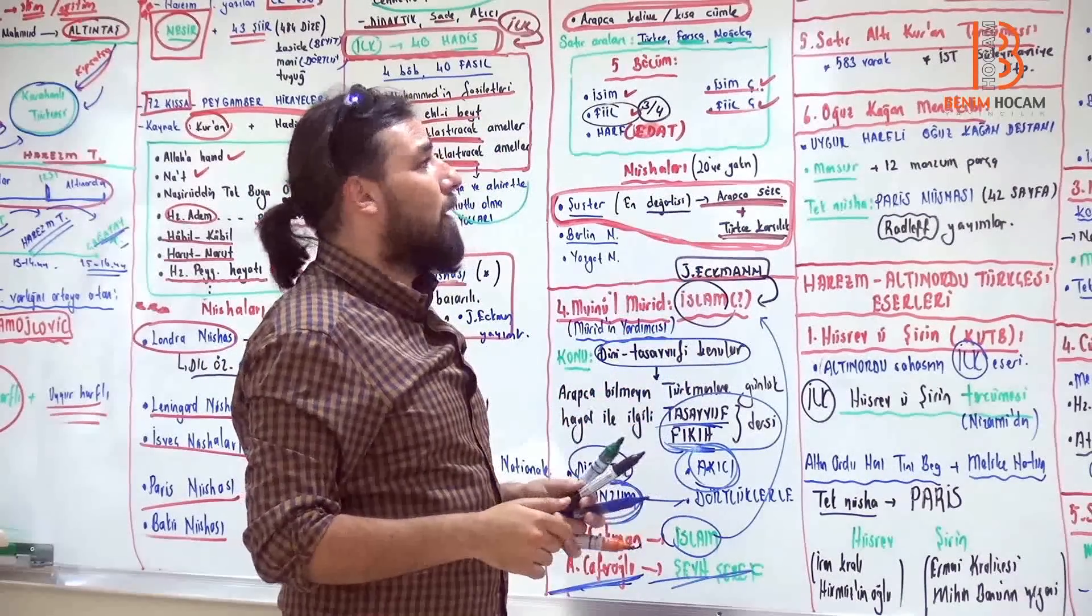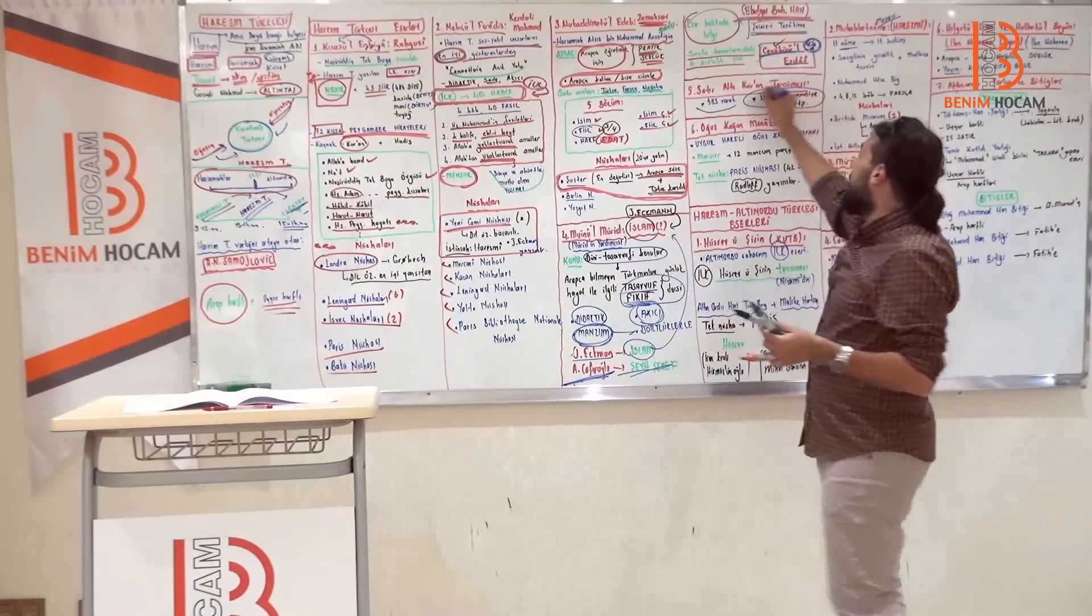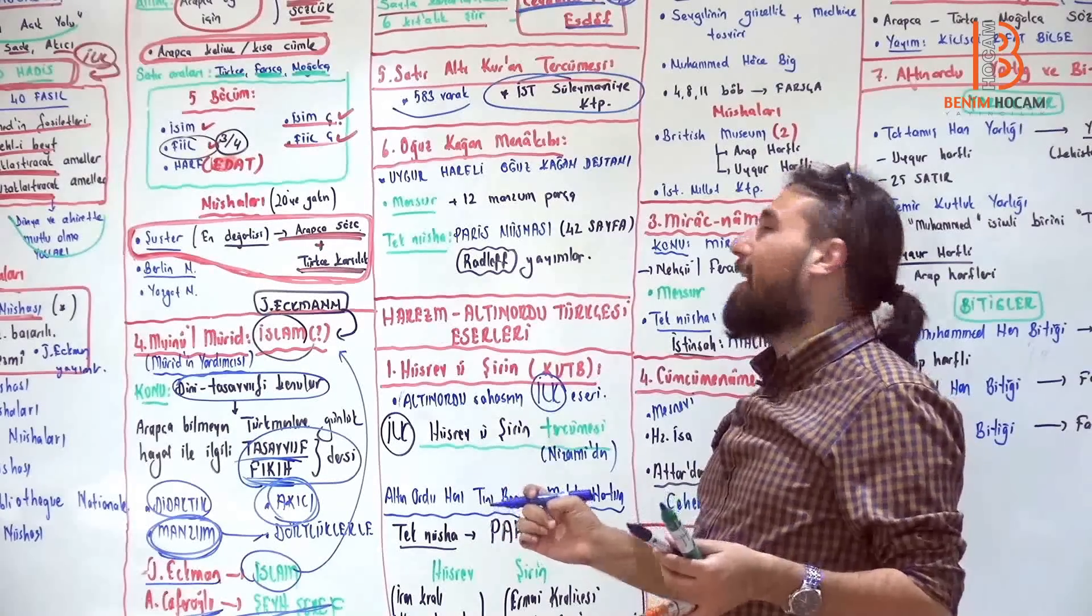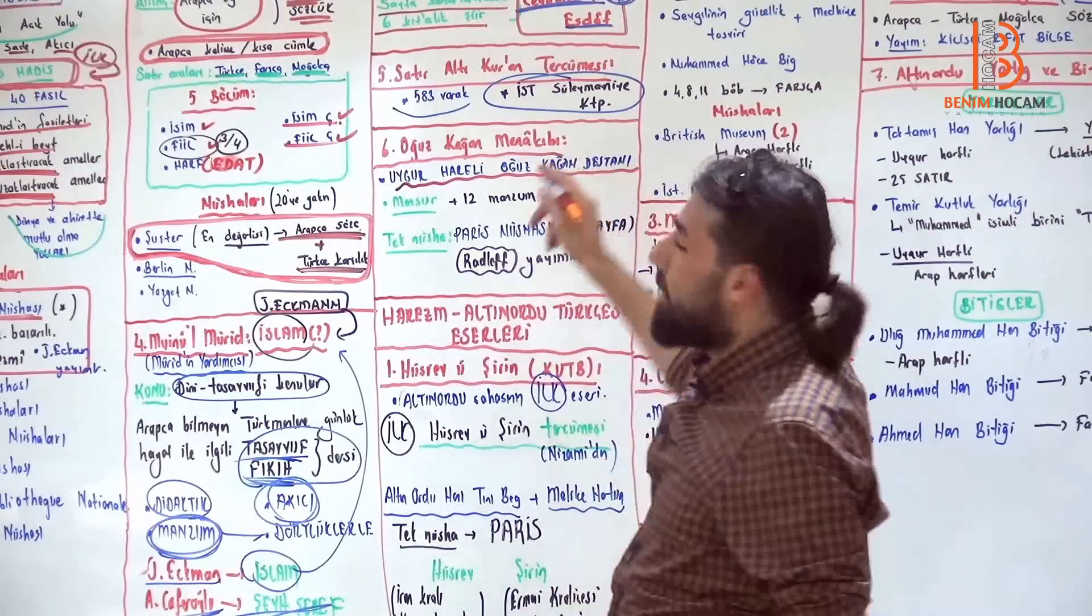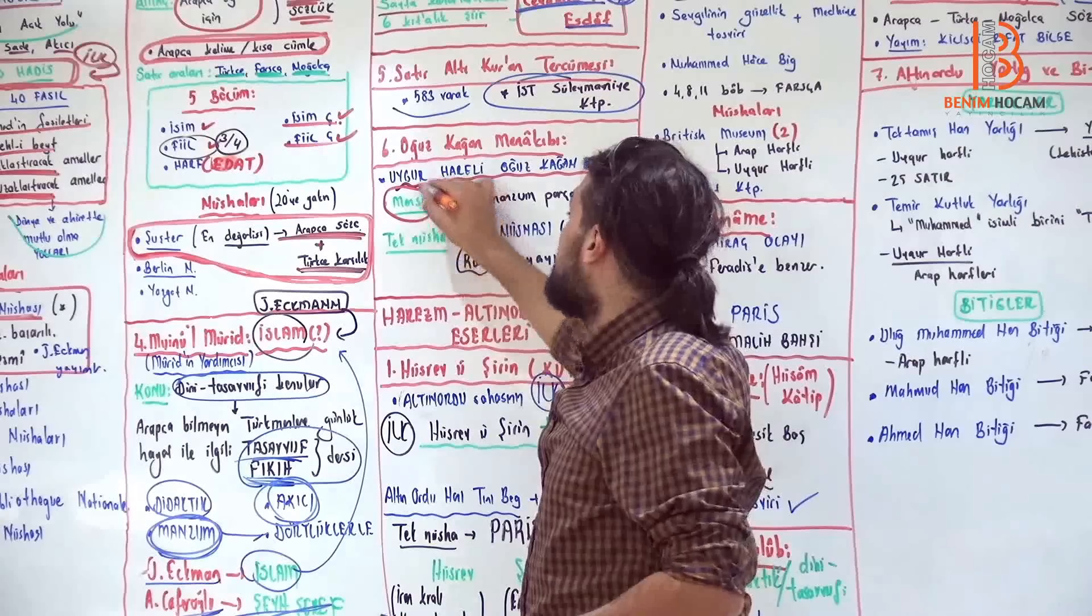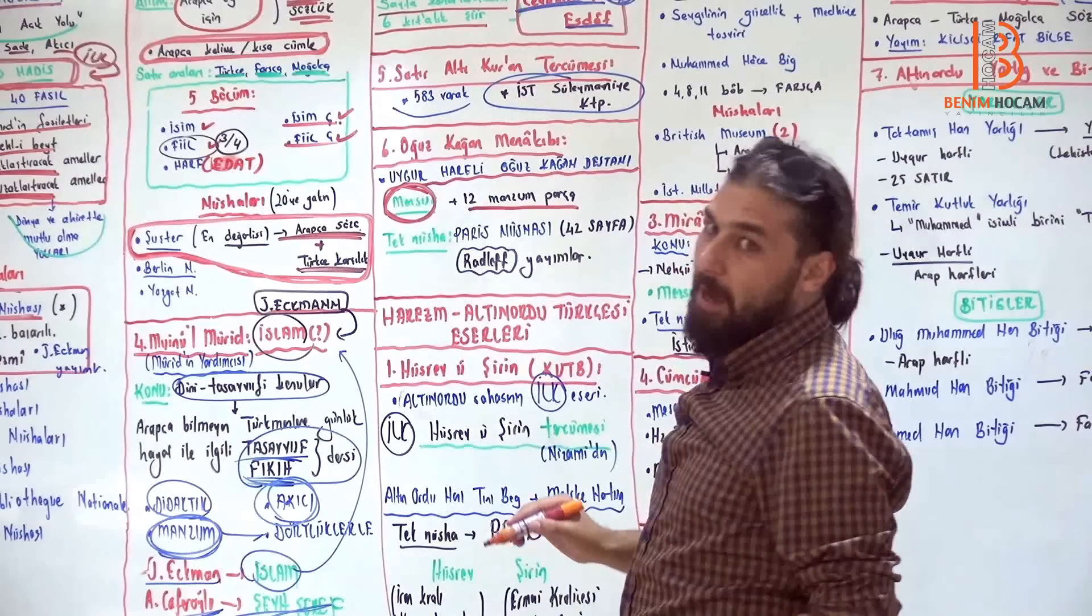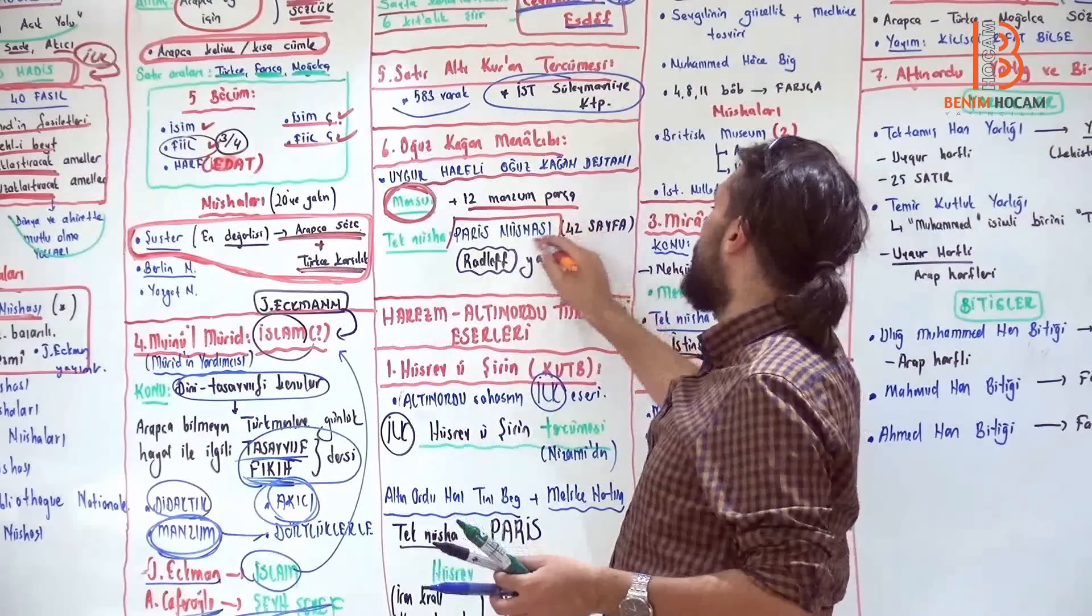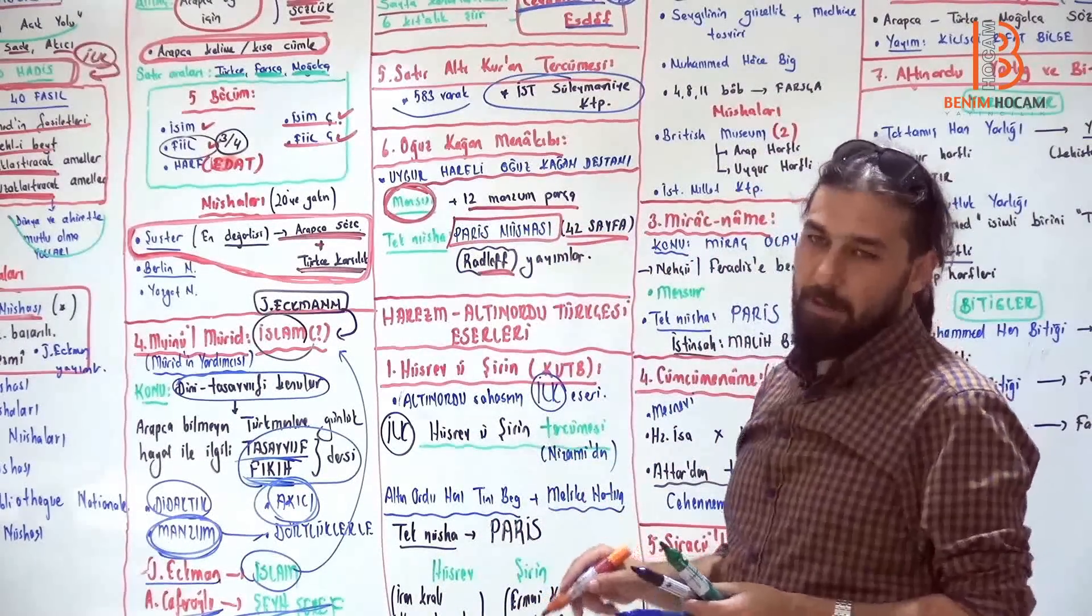Şimdi geldik, satır altı Kur'an tercümesi 583 varaktır. İstanbul'da Süleymaniye Kütüphanesi'nde bulunmaktadır. Yalnız bakın ilk satır altı Kur'an tercümeler değildir, onlar Karahanlı'da görmüştük. Oğuz Kağan menakıbı vardır. Bu Uygur harfli Oğuz Kağan destanıdır. Hatırlayın, genelde Arap harfliydi, arada Uygur harfliydi. Bak burada, mensurdur. Bak bir destan olarak mensur olması gariptir. 12 manzum parça vardır. Haliyle üzerinden 100 yıllar geçtiği için anlatır anlatırla mensurayla gelmiş. En ünlü nüshası Paris'in nüshasıdır, 42 sayfadır ve Radlov yayınlamıştır.